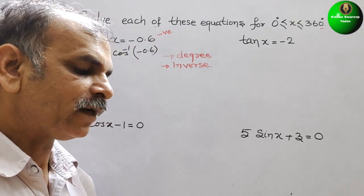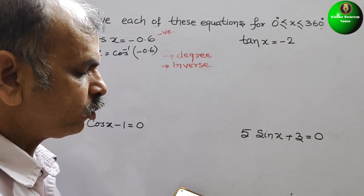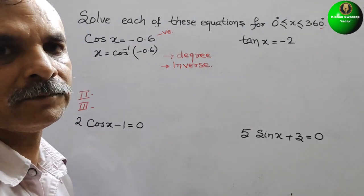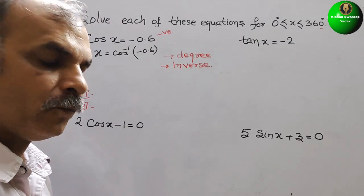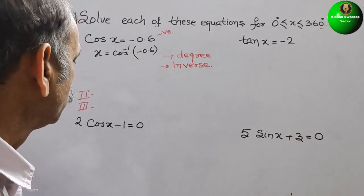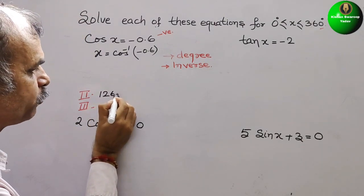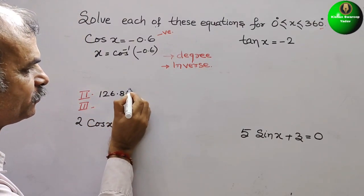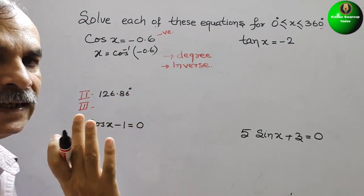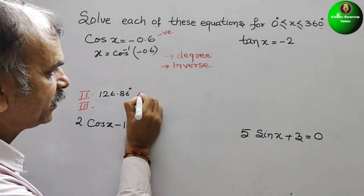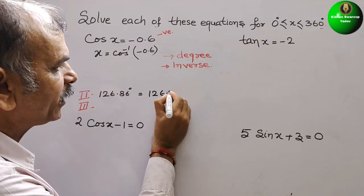If we press cos inverse and type -0.6, we will get 126.86°. You can see 126.86 — that lies in the second quadrant. This angle is approximately 126.9°.